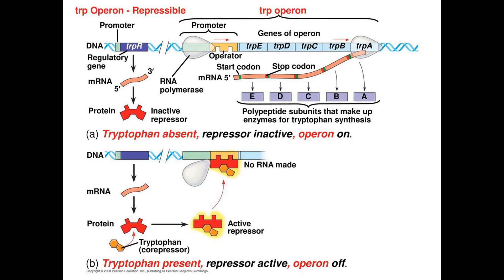An example of a repressible operon is the TRP operon. The TRP operon regulates genes involved in the biosynthesis of the amino acid tryptophan. Unlike in the repressor of the lac operon, the default shape of the repressor in this operon is not able to bind onto the operator. The repressor changes to the active form when tryptophan binds to the allosteric site, binding to the operator and turning the operon off. Here, the tryptophan that binds to the repressor is called a co-repressor. This way, the cell can turn off an entire metabolic pathway when tryptophan is already provided.